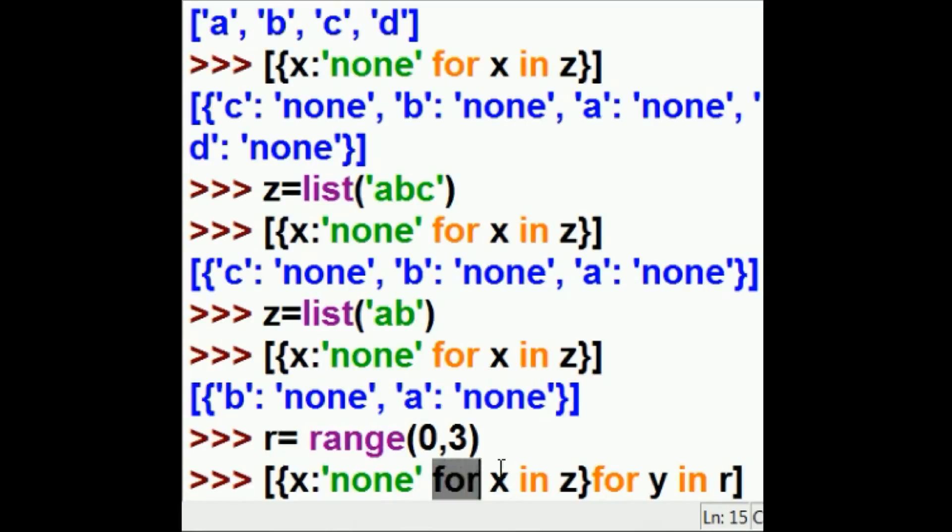I stipulated the first loop will be for X in Z, Z being this fellow here, and then I want to do it this many times. I want to do all of this this many times for Y in R. That's three times.